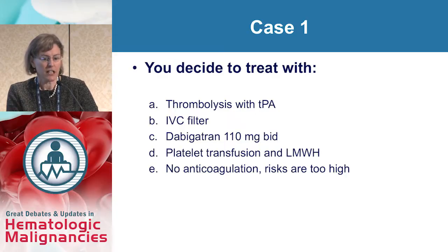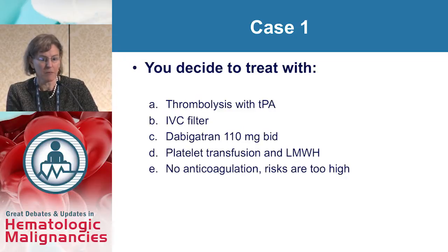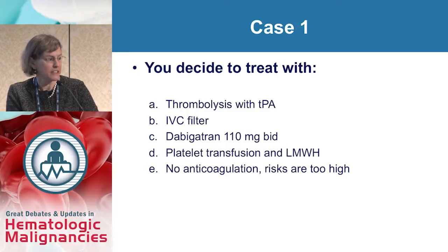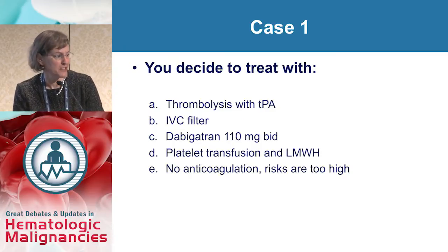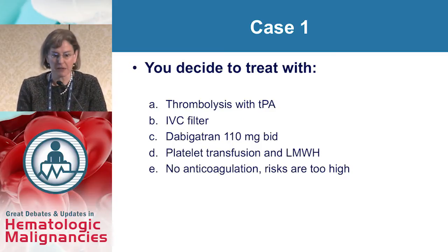You decide to treat with: A, thrombolysis with TPA; B, IVC filter; C, dabigatran 110 mg BID; D, platelet transfusion and low molecular weight heparin; or E, no anticoagulation — the risks are too high. This is a question I get asked quite frequently.